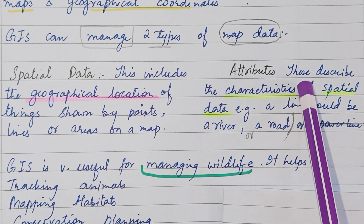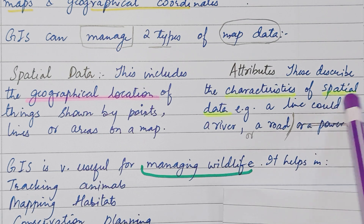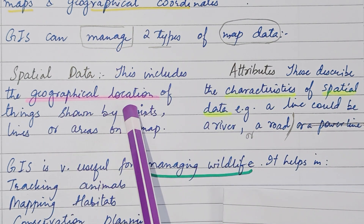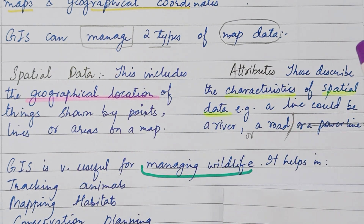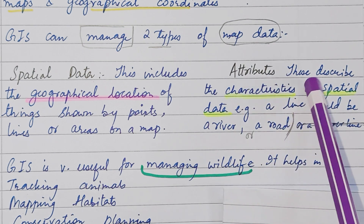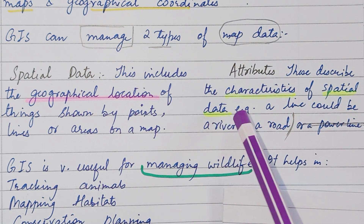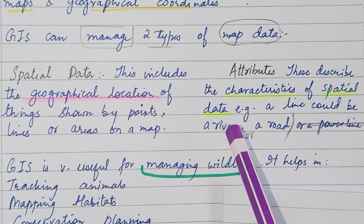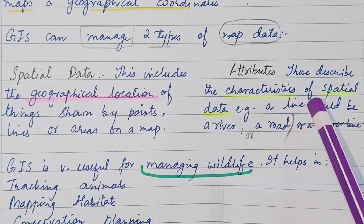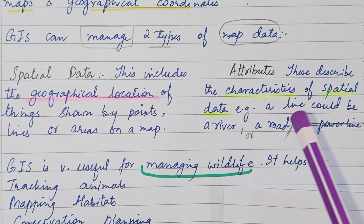Attributes describe the characteristics of spatial data. For example, a line could represent a river or a road.